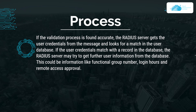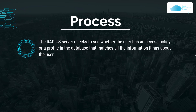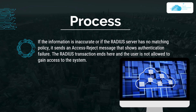If the validation process is found accurate, the RADIUS server gets the user credentials from the message and looks for a match in the user database. If the credentials match, the RADIUS server may retrieve further user information from the database, such as functional group membership, login hours, and remote access approvals. After that, the RADIUS server checks whether the user has an access policy or profile in the database that matches all the information it has about the user.